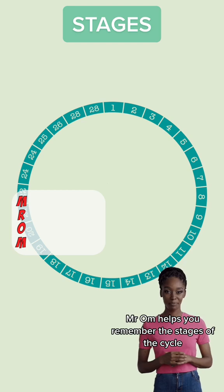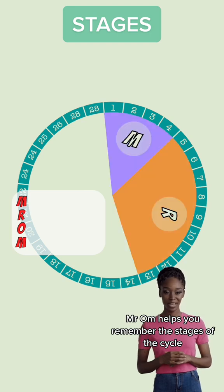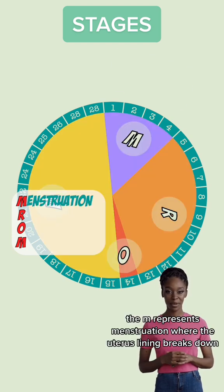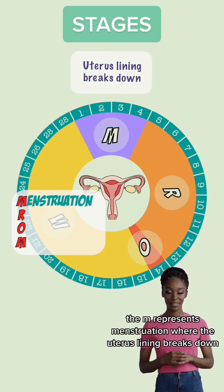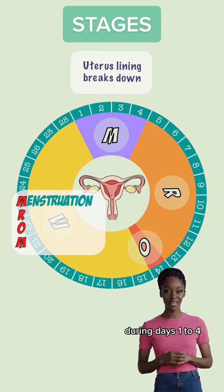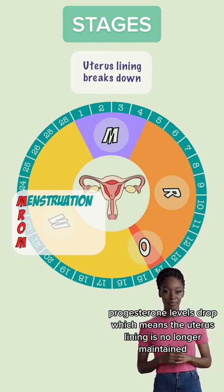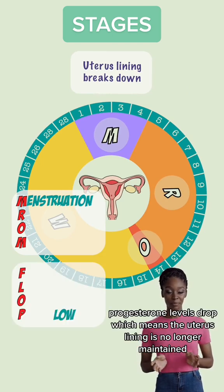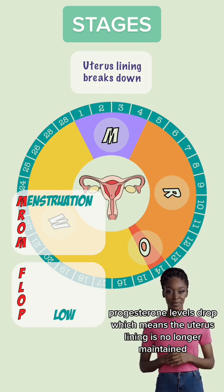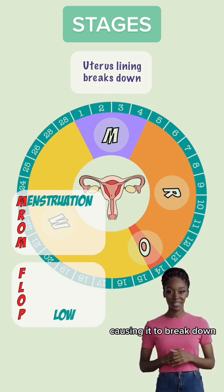Mr. OM helps you remember the stages of the cycle. The M represents menstruation, where the uterus lining breaks down during days 1–4. Progesterone levels drop, which means the uterus lining is no longer maintained, causing it to break down.